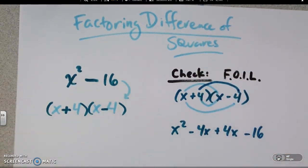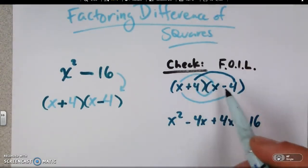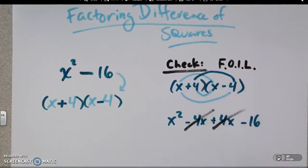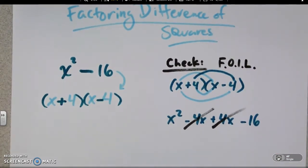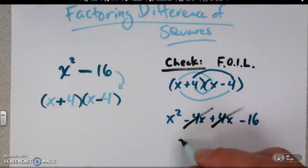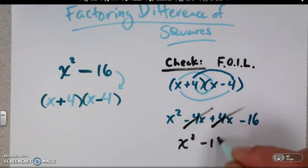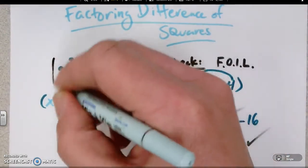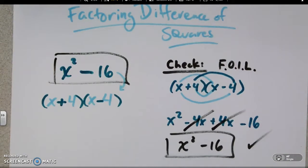And here's the key for why this works. If you do this carefully, you'd need a plus and a minus because what happens is the 4x and the minus 4x cancel each other out. And what are you left with? Just x squared minus 16, which checks because that's what you started with. That right there is the difference of squares.